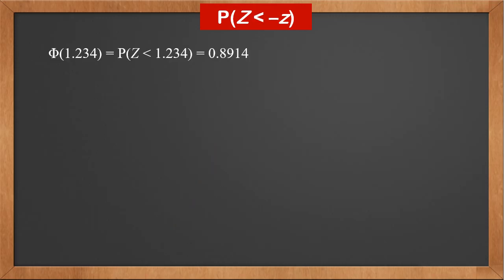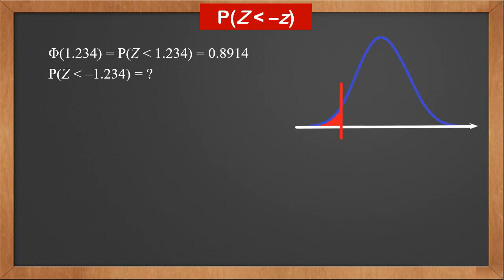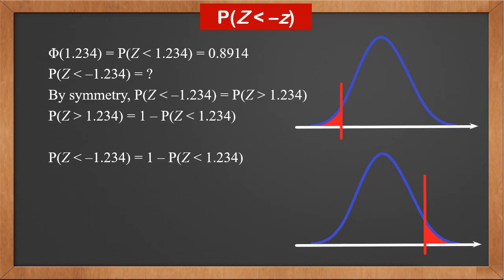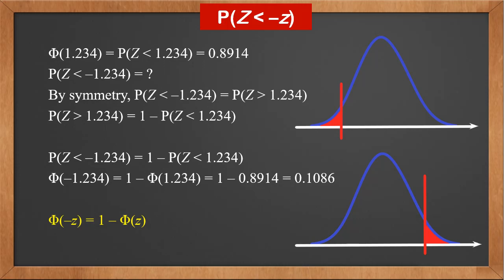We know phi(1.234) is 0.8914. Then what is P(Z < -1.234)? Looking at the graph, it's the area to the left of -1.234. We know the bell curve is symmetric, so it is equal to the area to the right of +1.234. Therefore, by symmetry, P(Z < -1.234) = P(Z > 1.234) = 1 - P(Z < 1.234). So phi(-1.234) = 1 - phi(1.234) = 1 - 0.8914 = 0.1086. In general, phi(-z) = 1 - phi(z).